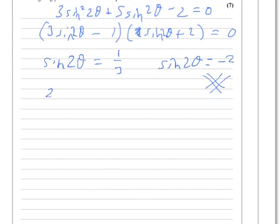Sine 2 theta equals 1 third, then 2 theta equals - now we whip out a calculator here and we're going to get something like 19.4 degrees.